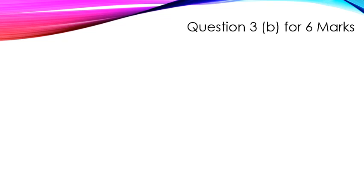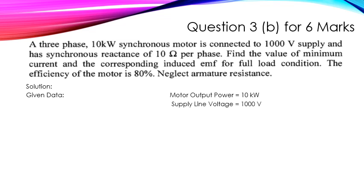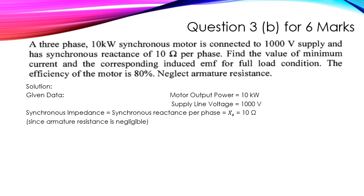Next is Question 3a, also for six marks. The question is: a three-phase, 10 kW synchronous motor is connected to a 1000 V supply and has a synchronous reactance of 10 ohm per phase. Find the minimum current and the corresponding induced EMF at full load. The efficiency of the motor is 80%. Neglect armature resistance. Given: output = 10 kW, line voltage = 1000 V, synchronous impedance Zs = Xs = 10 ohm per phase, efficiency = 80%.